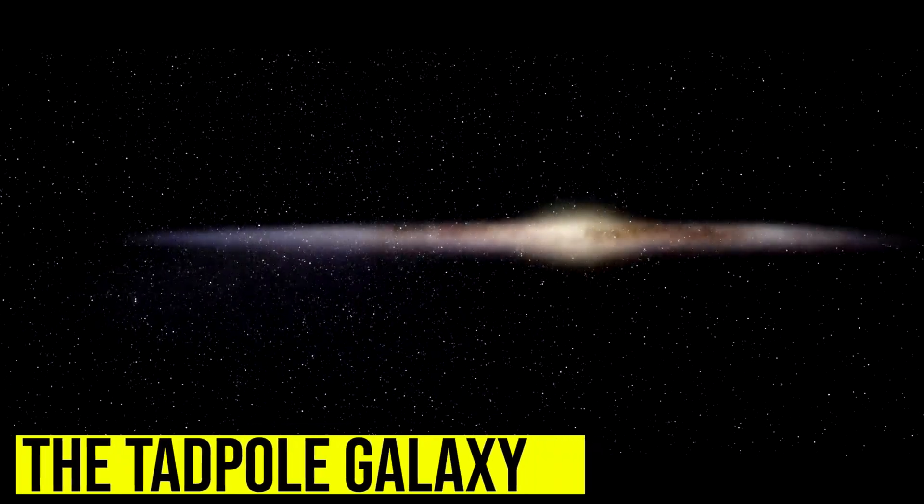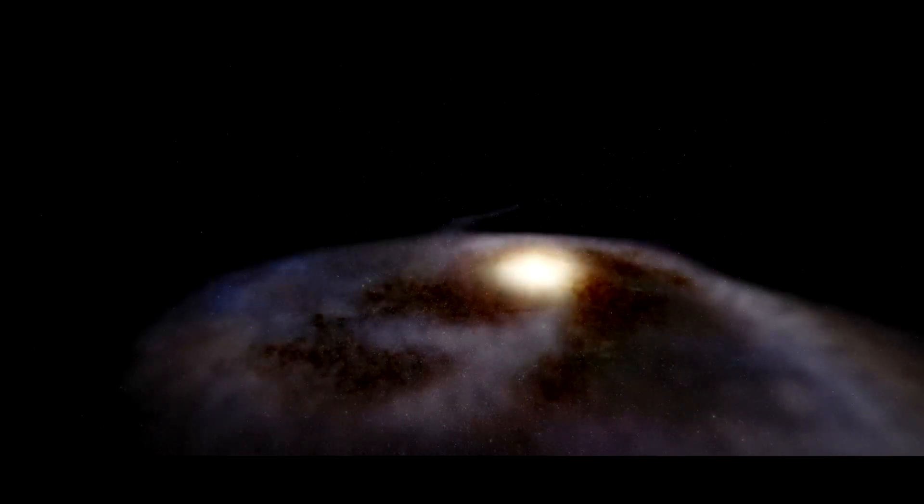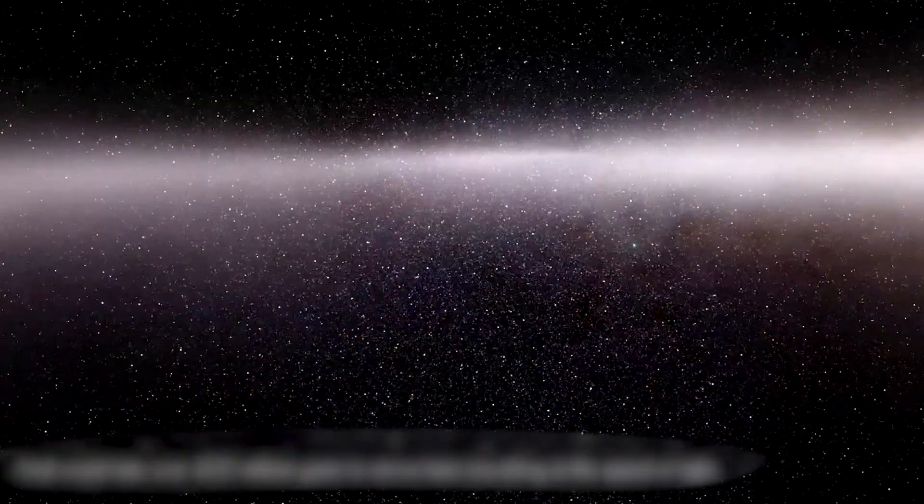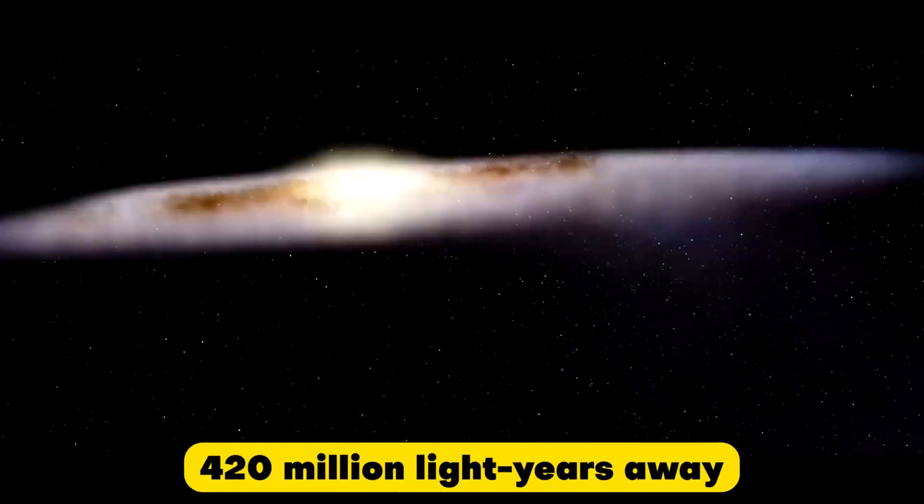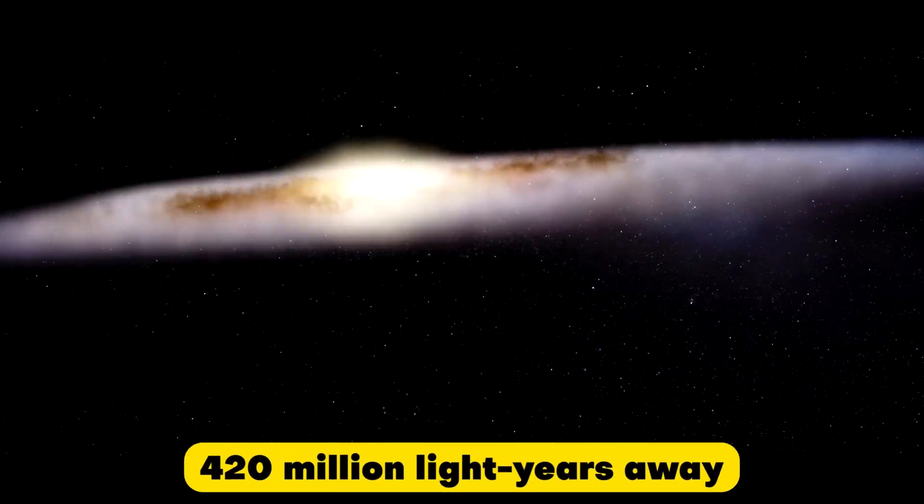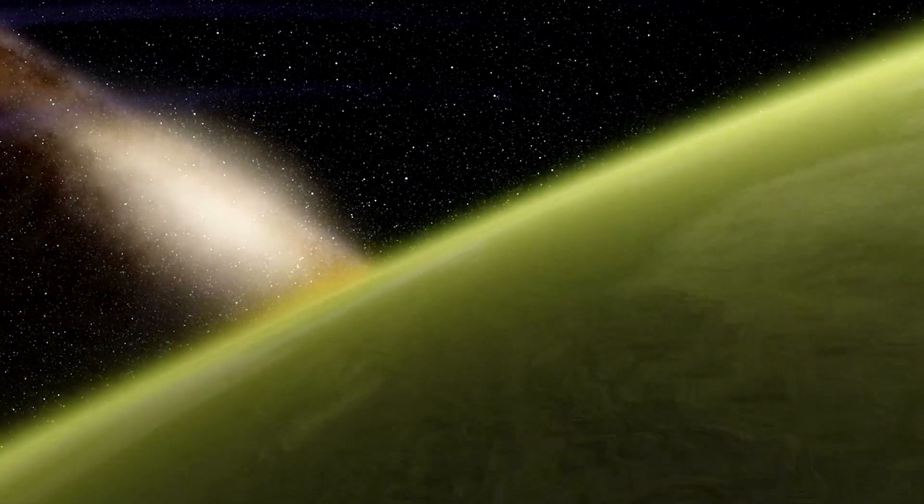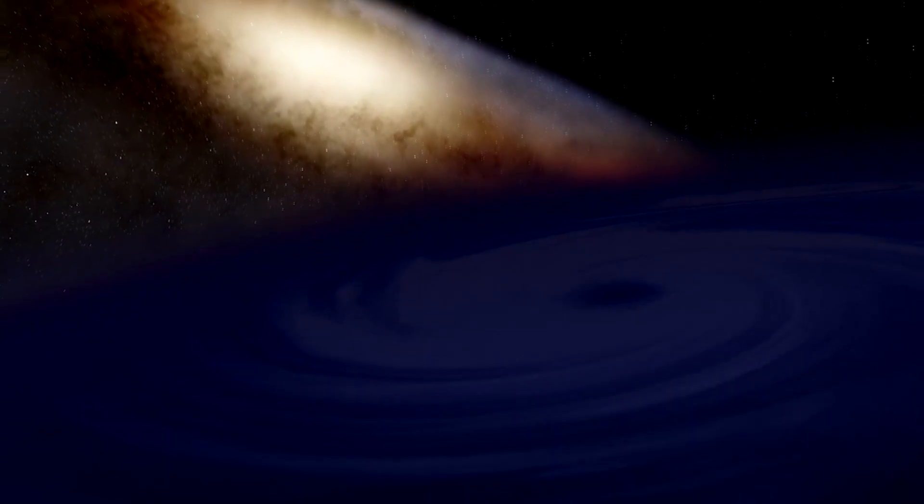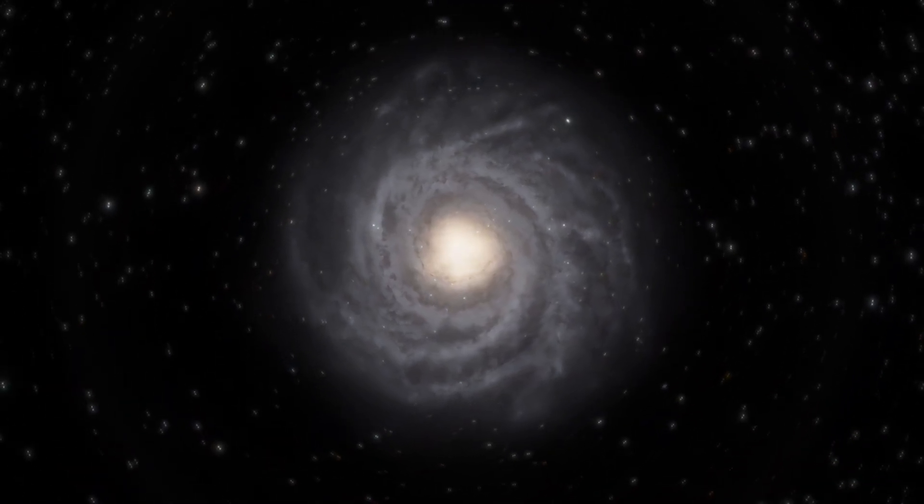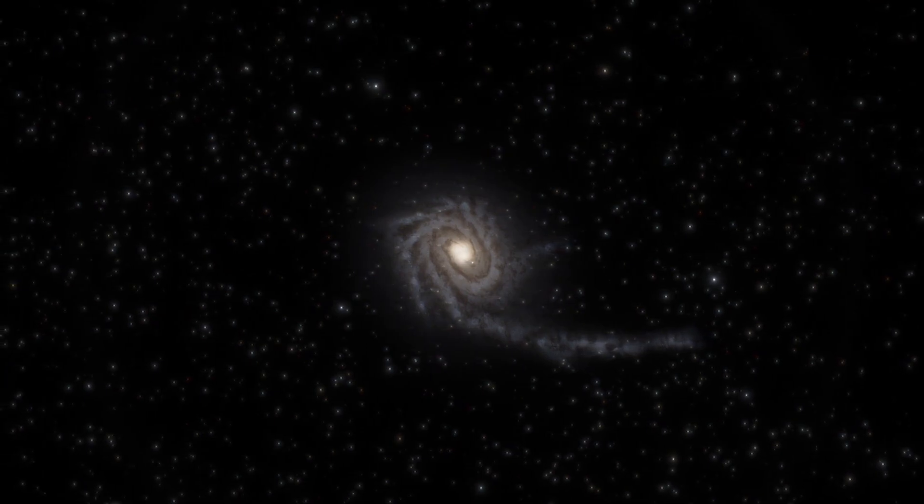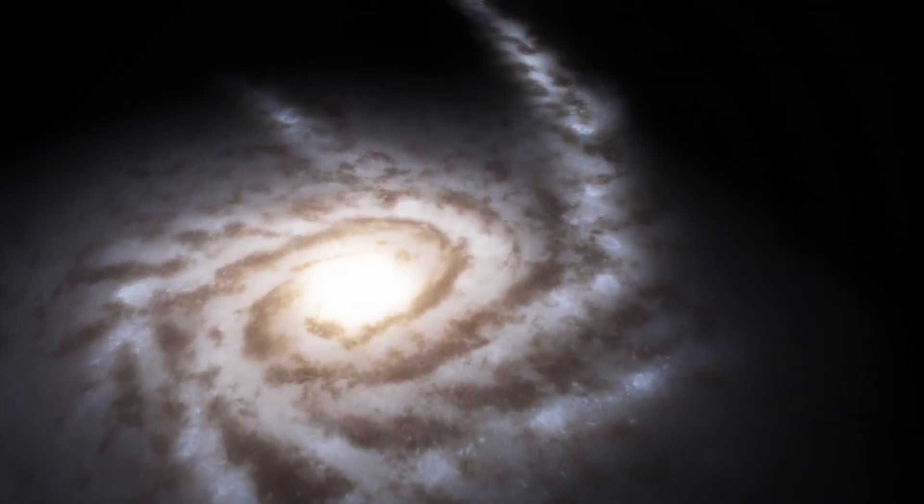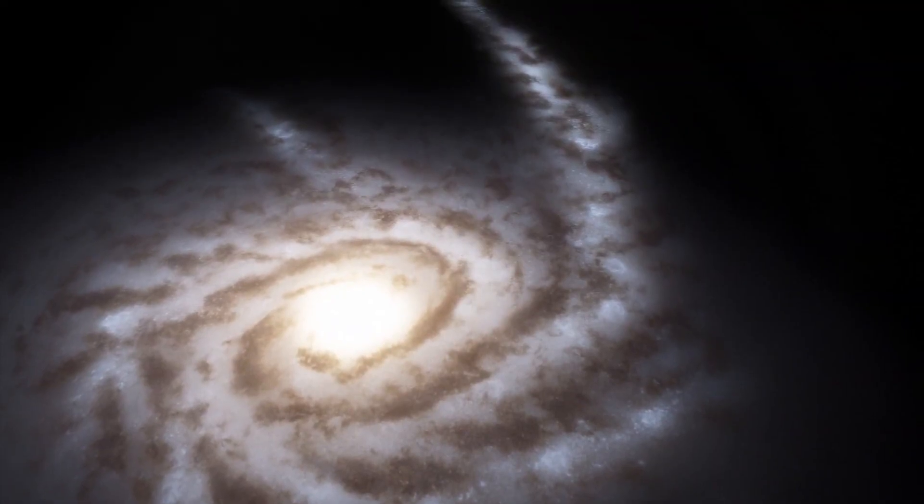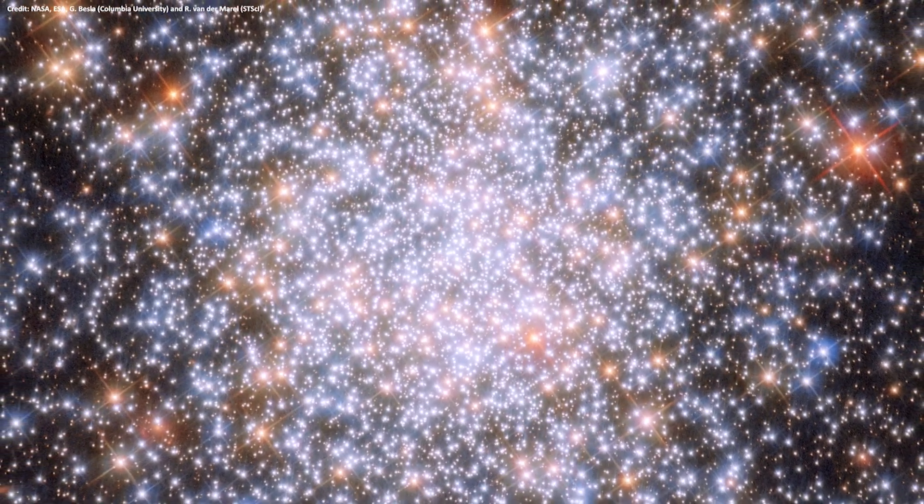The Tadpole Galaxy is a galaxy that resembles a tadpole swimming through space. The galaxy is located approximately 420 million light-years away in the constellation Draco, and is believed to have formed from a collision between two galaxies. The collision caused a burst of star formation, and the resulting tidal forces stretched out the galaxy's gas and dust, creating the tadpole-like structure. The Tadpole Galaxy is a popular target for astronomers studying galaxy formation and evolution. The galaxy's structure provides insight into the complex processes that occur during galaxy mergers and collisions.